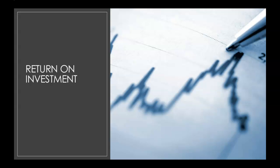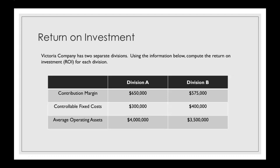Let's work through a return on investment example problem. Victoria Company has two separate divisions, Division A and Division B. Using the information in the table, we need to compute the return on investment, or ROI, for each of those divisions. We're given contribution margin, controllable fixed costs, and average operating assets for each of our two divisions.